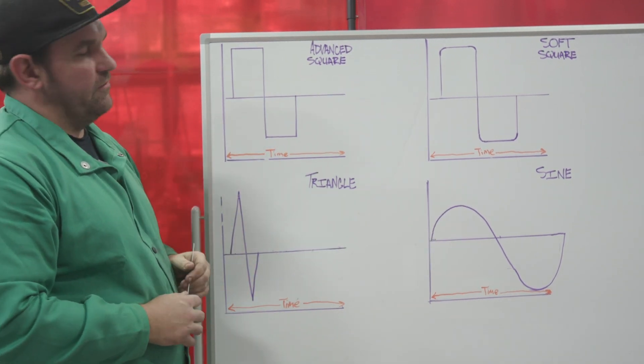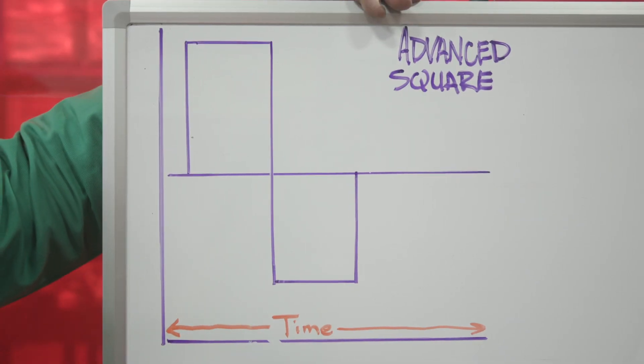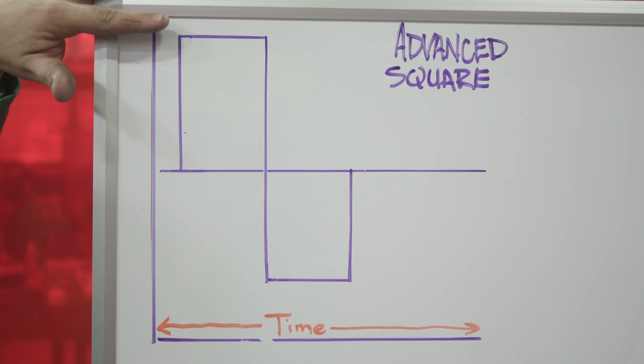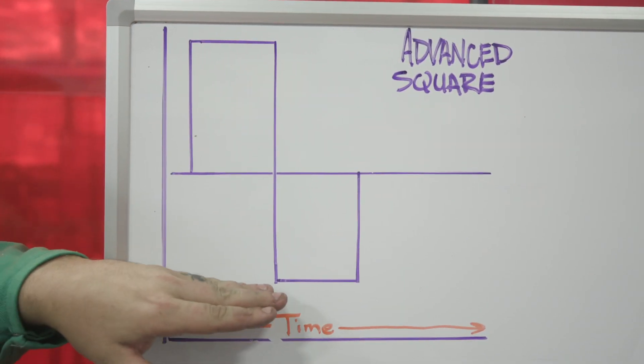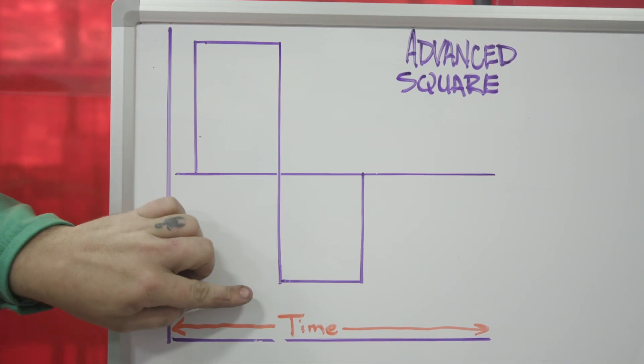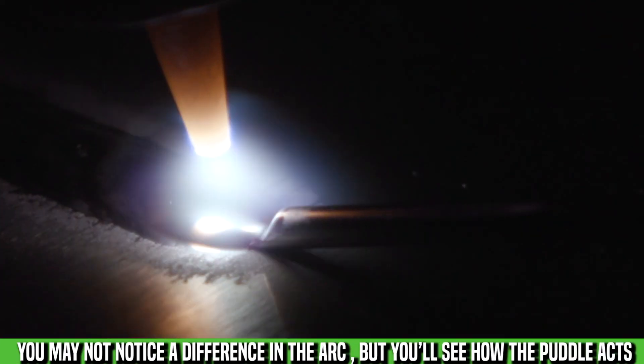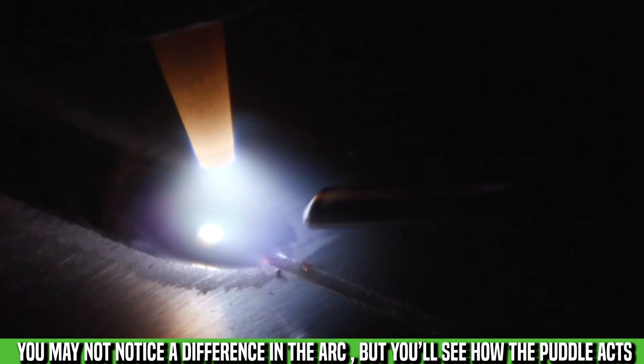We're going to start here with advanced square. You can see that we have maximum amount of time spent at our electrode positive and our electrode negative with a very harsh transfer between the two. This is actually a good thing. This very fast transfer time creates a very stable arc.